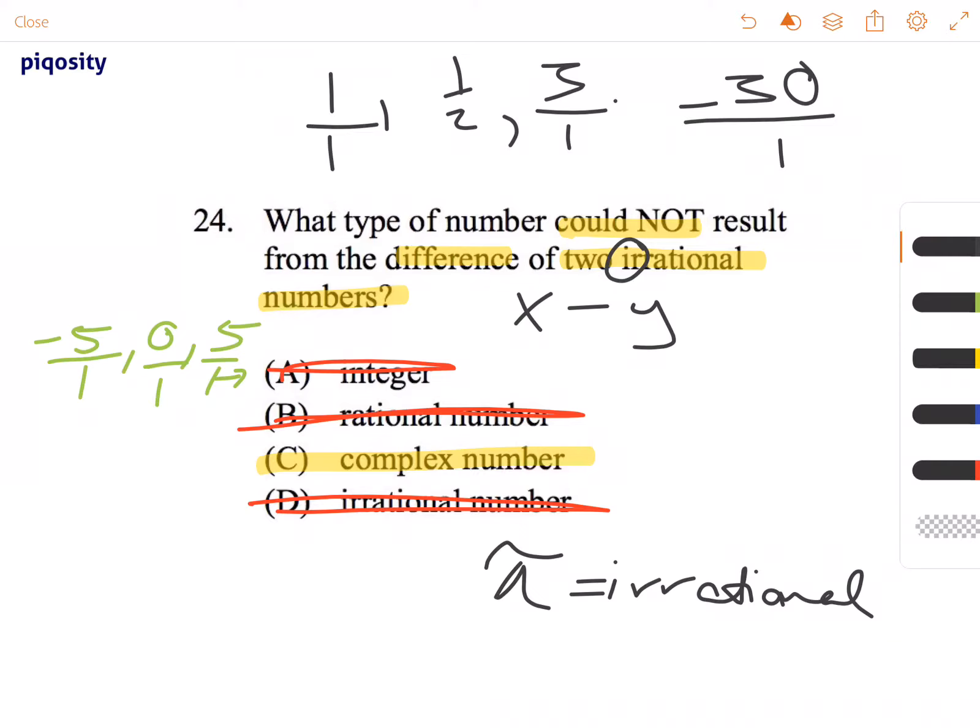Another way of quickly identifying that a complex number cannot be the result of the difference between two irrational numbers is that a complex number has a real part and a fake part, or imaginary. This italicized 'i' stands for the square root of negative 1, which is an imaginary number, because there's no such thing as the square root of a negative value.